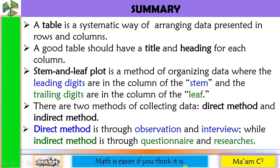Summary: a table is a systematic way of arranging data presented in rows and columns. A good table should have a title and heading for each column. A stem and leaf plot is a method of organizing data where the leading digits are in the stem column and the trailing digits are in the leaf column. There are two methods of collecting data — direct method and indirect method. Direct method is through observation and interview, while indirect method is through questionnaire and searching.